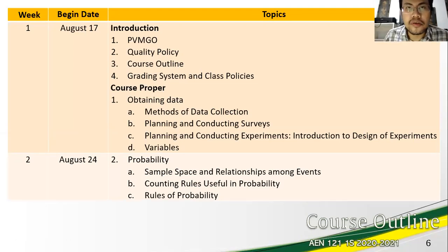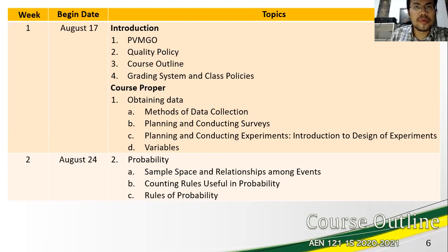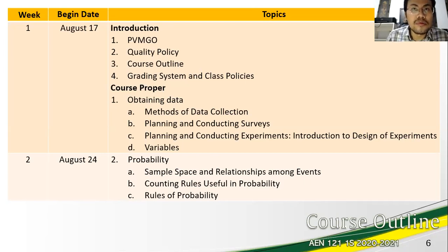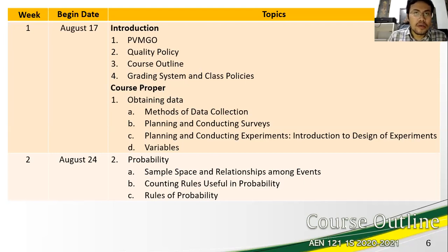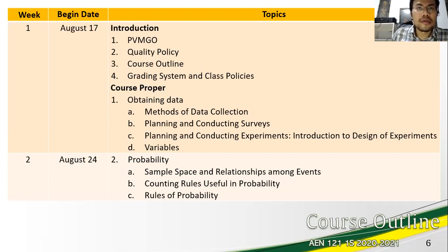So far we have discussed the PVMGO of the university. Let us proceed with the course outline, with the course proper beginning in the next lecture video. There are 13 topics distributed throughout the 18-week semester, divided into three assessment periods. The first two periods culminate with a project and the last one with an examination covering the entire course syllabus. The first assessment period will cover data — particularly obtaining it — probabilities, and probability distributions.